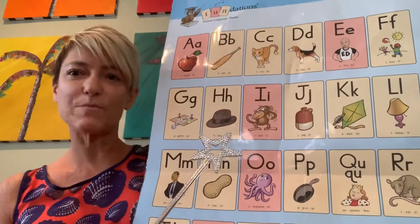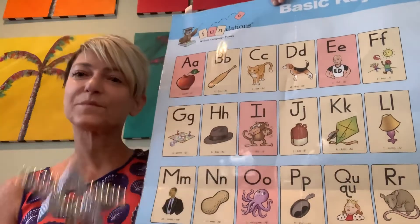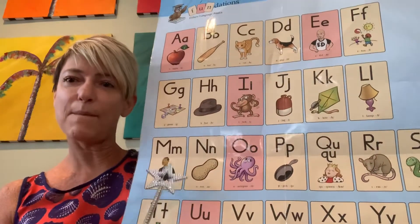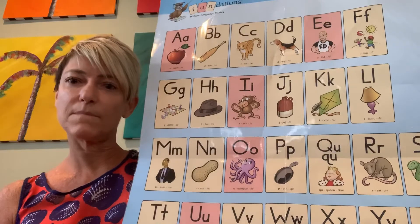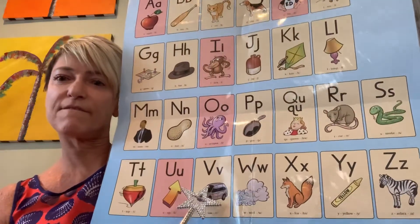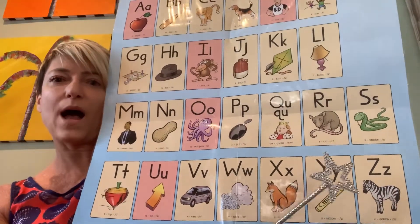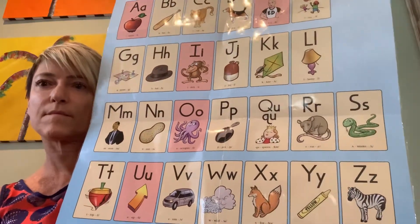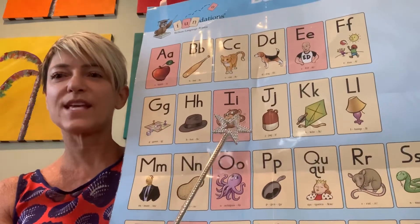You say it after me. H - hat - h. M - man - m. V - van - v. Y - yellow - y. And I - itch - i.